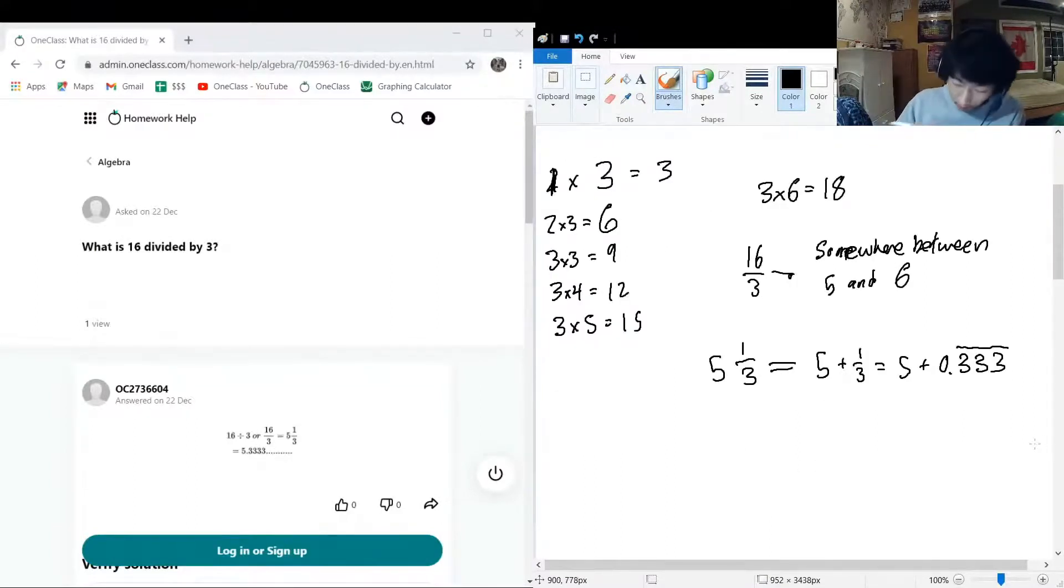Of course, this seems like fairly straightforward math. So we know that the result of this is going to be 5.333 with a line on top. And this will be equal to our original question, which was what is 16 divided by 3, 16 over 3, and another way of saying that, what is 16 divide symbol 3.